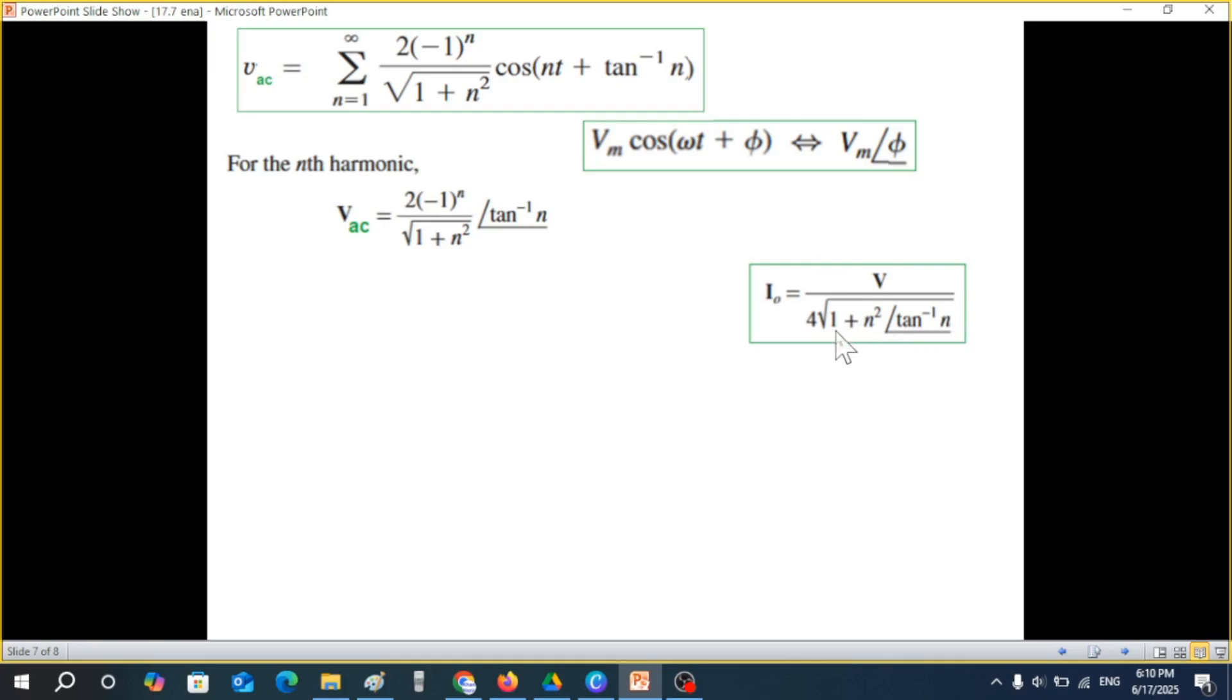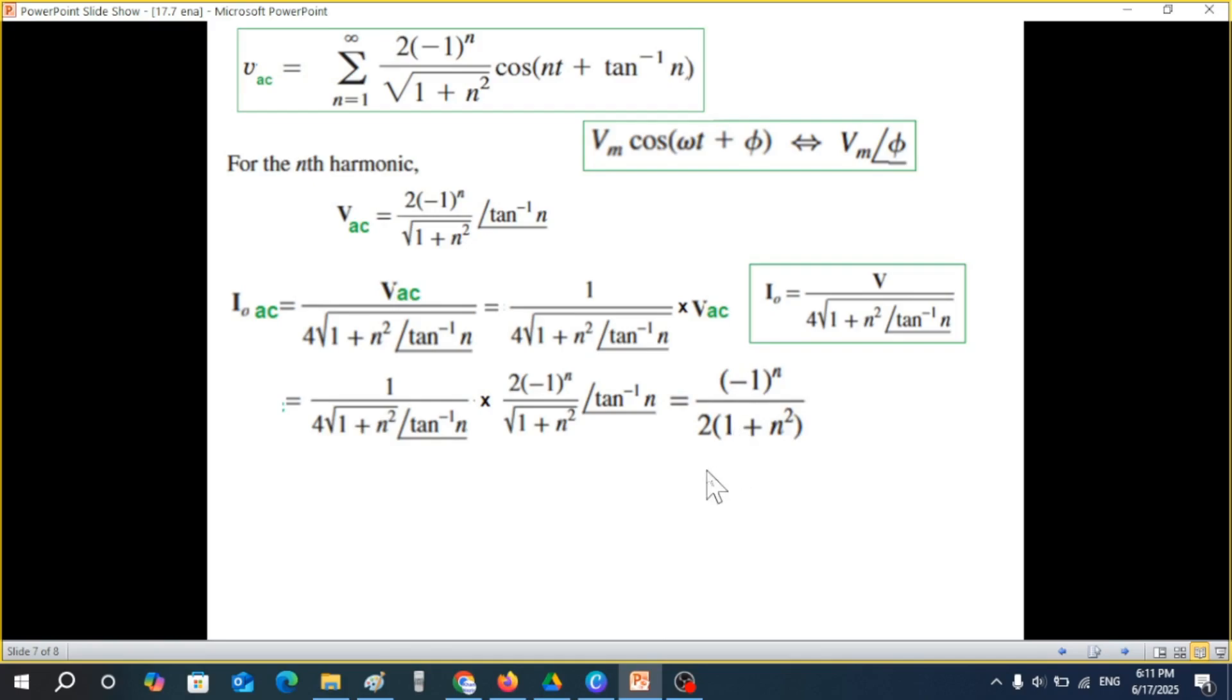For nth harmonic we remove the summation sign, keep this value and write the magnitude and phase angle. I₀ we had found this value. So I₀AC is VAC divided by this value. VAC is the value given here, so we'll plug in that value. This multiply by VAC, then 1 over this value multiplied by the value of VAC from here. And solving we get this answer. This under root and this under root multiply will be 1 + n², 2 and 4 will be 2, minus 1 and power n. So this is I₀AC.